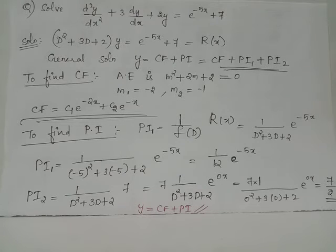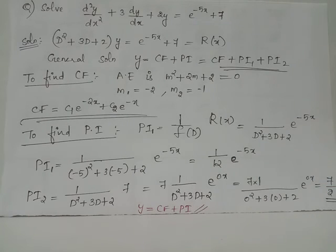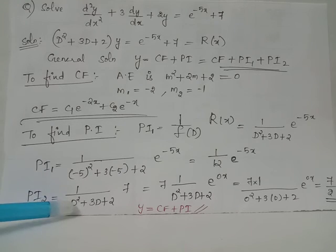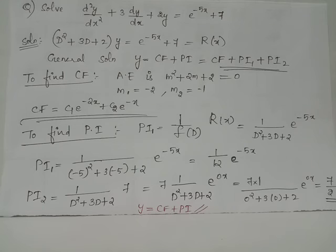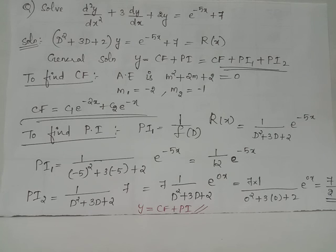PI2 = 7·[1/f(D)]·e^(0x), where a = 0 (the coefficient of x in the exponent). We replace D by 0, so the denominator becomes 0² + 3(0) + 2 = 2. Since the denominator is non-zero, PI2 = 7·e^(0x)/2. Since e^(0x) = 1, PI2 = 7/2.